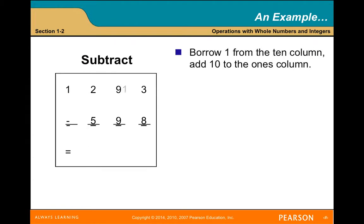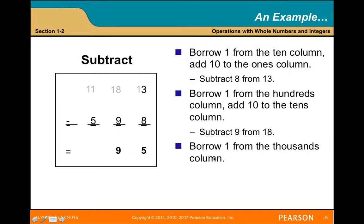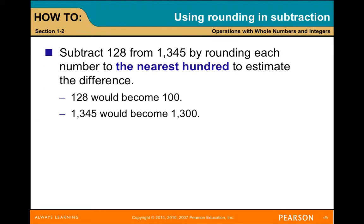For example, subtracting 1,283 minus 598: borrow one from the tens column, add 10 to the ones column, then subtract 8 from 13. Next, borrow one from the hundreds column, add 10 to the tens column, and subtract 9 from 18. Then borrow one from the thousands column and subtract 5 from 11. The answer is 685. For rounding in subtraction: 128 rounds to 100 and 1,345 rounds to 1,300, giving an estimated difference of 1,200.